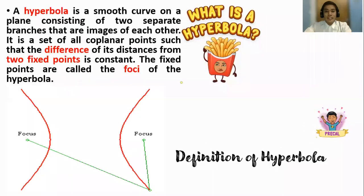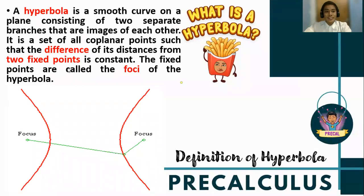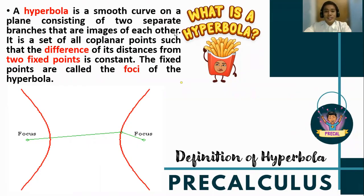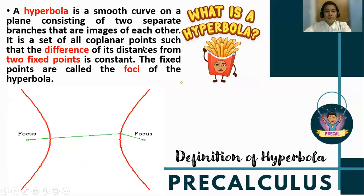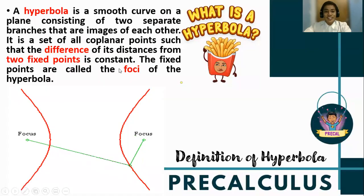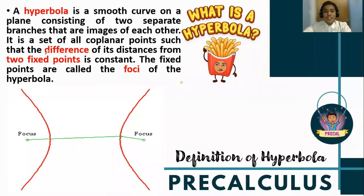How do we define a hyperbola in two dimensions? A hyperbola in two-dimensional conics is a smooth curve on a plane consisting of two separate branches that are mirror images of each other. As you can see, the red lines are what we call the branches of the graph. It is the set of all coplanar points such that the difference of its distances from two fixed points is constant.